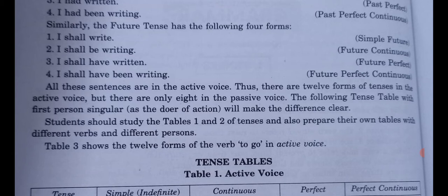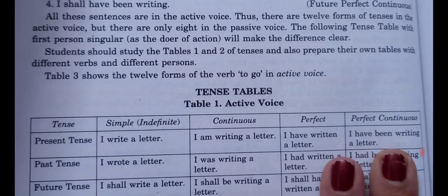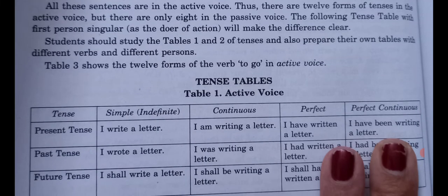The tense table, using the first person singular as the doer of the action, will make the difference clear. Now we will see the table.